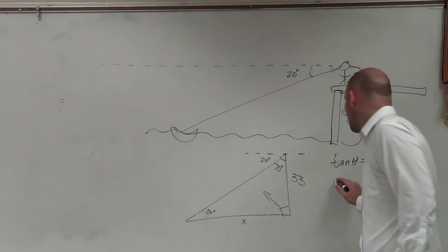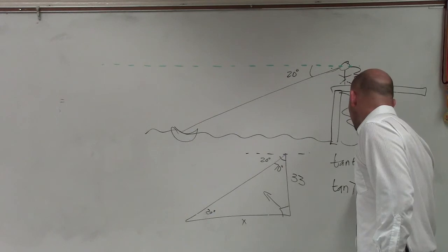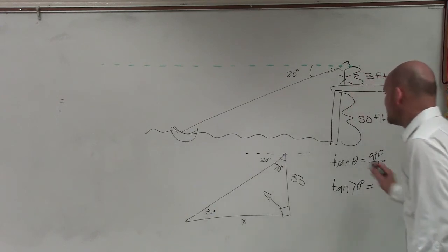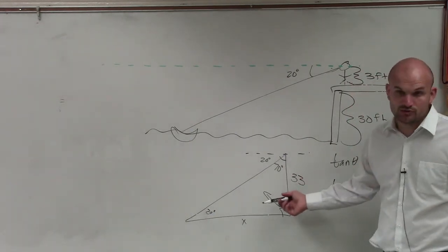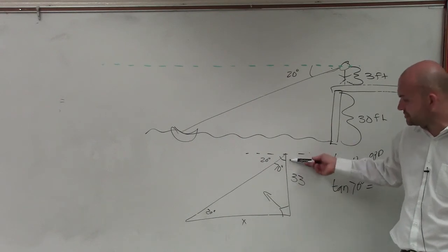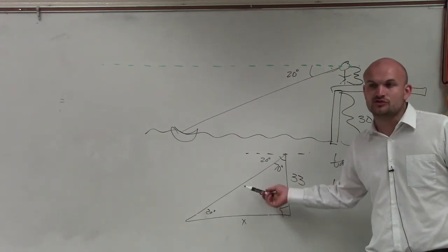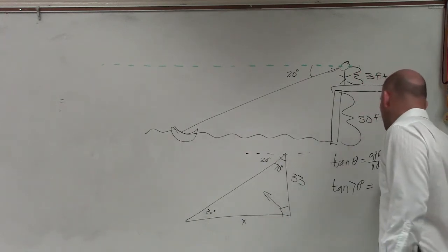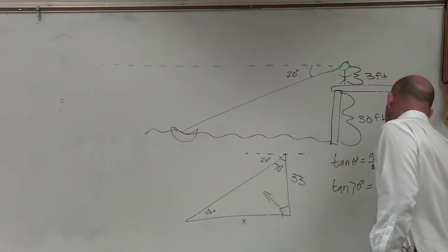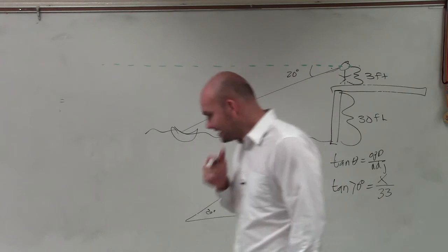The tangent of my angle here is 70 degrees equals my opposite side. So now I need to determine which one's opposite. Remember, the adjacent connects your angle with the 90-degree angle, and the opposite is directly across from your angle. So therefore I have tangent of 70 degrees equals x over 33. Now Colin, what's the next thing I have to do?